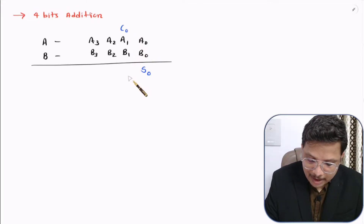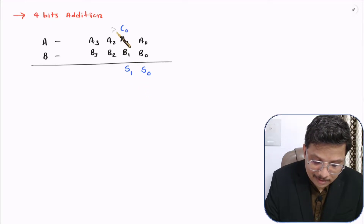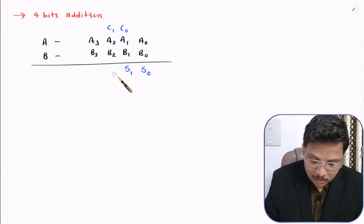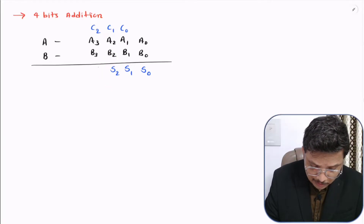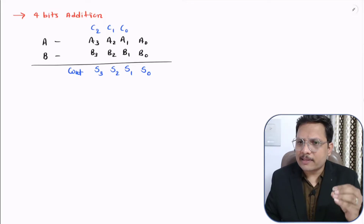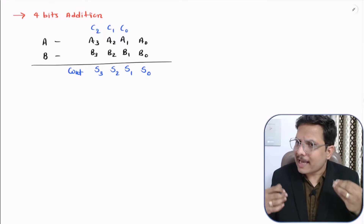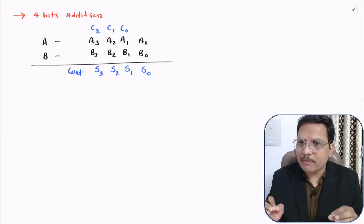Next, to get S1, we add C0, A1, and B1, resulting in S1 and carry C1. To have sum S2, we add C1, A2, B2, generating sum S2 and carry C2. And once we add C2, A3, B3, we get sum S3 and output carry C out. That is how we can perform basic addition. Here I have considered four bits, but you can have any number of bits. For simplicity, I have considered this four-bit example.